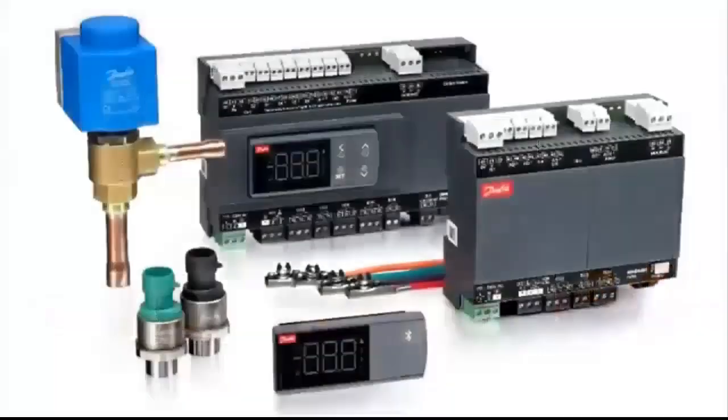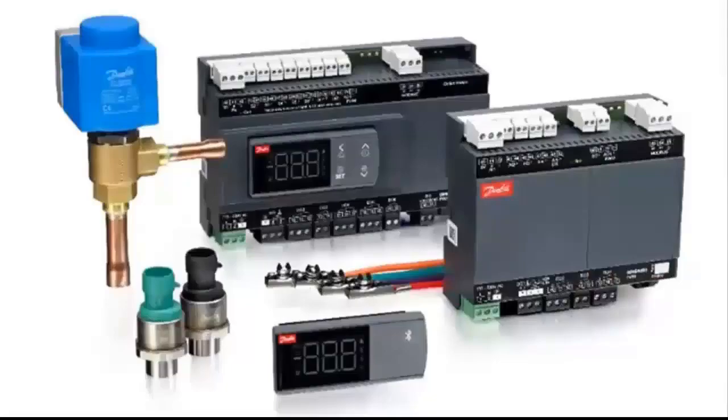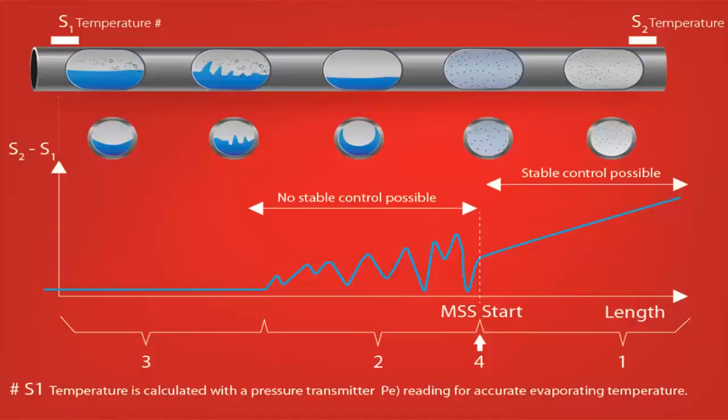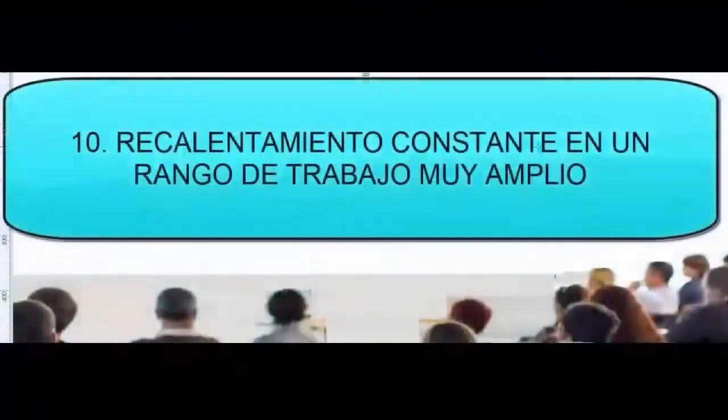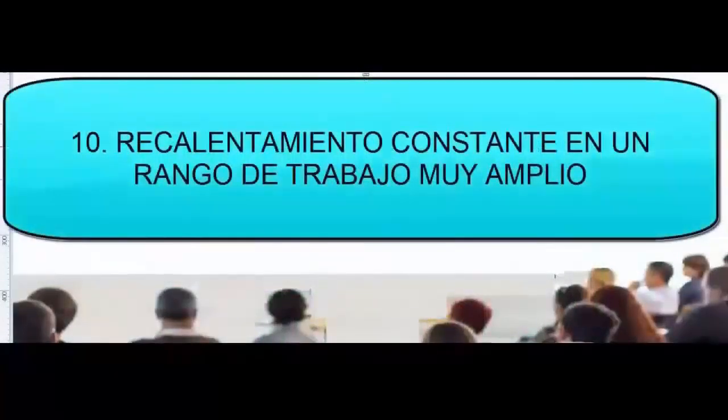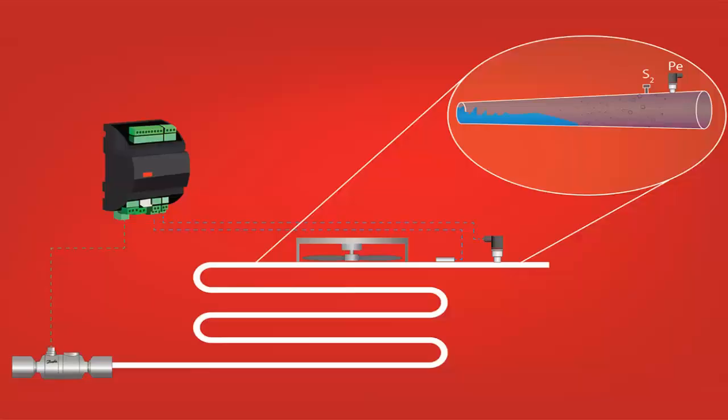Depending on the model of the evaporator controller, control of 1, 2, or more evaporators can be realized. With the use of electronic evaporator controller, there is the possibility of increasing the suction pressure, reducing electrical consumption. The electronic control of the evaporator guarantees the lowest possible superheat, bringing performance closer to a system with a flooded evaporator.